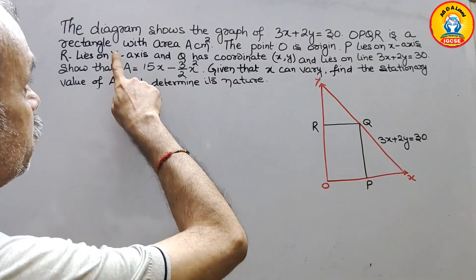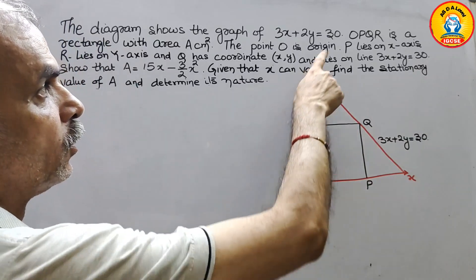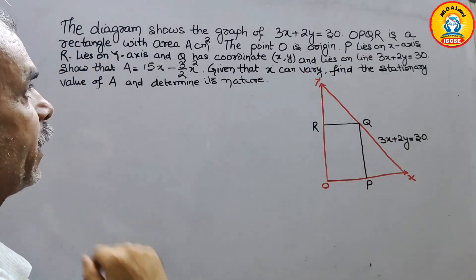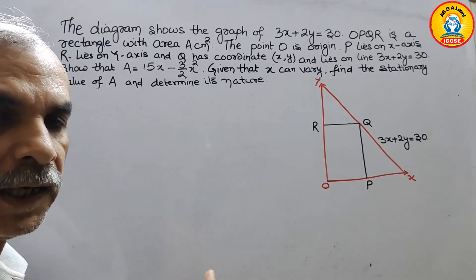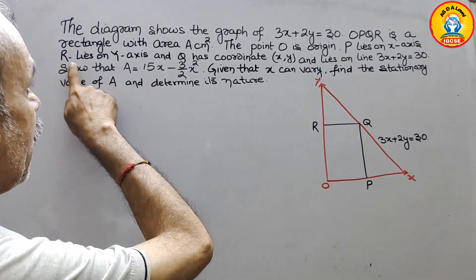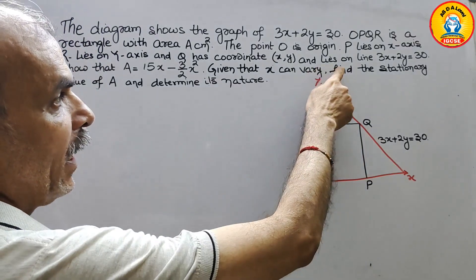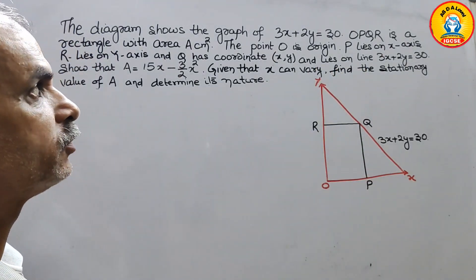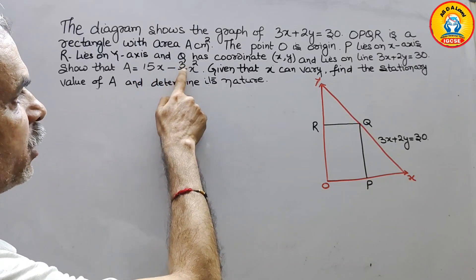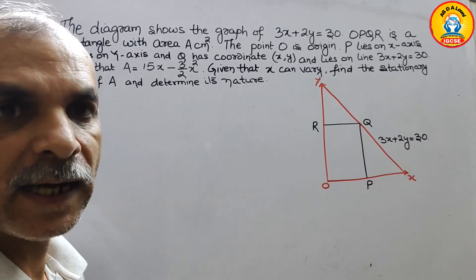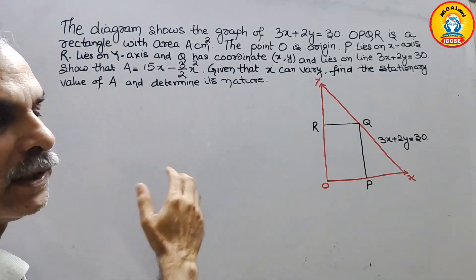The question is: the diagram shows the graph of 3x + 2y = 30. OPQR is a rectangle with area A cm². The point O is the origin, P lies on the x-axis, R lies on the y-axis, and Q has coordinates (x, y) and lies on the line 3x + 2y = 30. Show that the area equals 15x minus (3/2)x². Given that x can vary, find the stationary value of A and determine its nature.